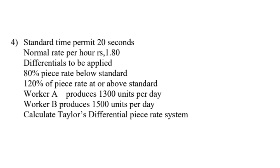Problem number four: Standard time permitted is 20 seconds, normal rate per hour is rupees 1.8. The differentials to be applied are 80 percent of piece rate below standard and 120 percent of piece rate at or above standard. Worker A produces 1300 units per day and worker B produces 1500 units per day. Calculate piece rates under straight piece rate system and Taylor's differential piece rate system.